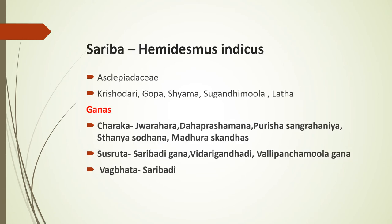The last dravya for today is Shairiba — Hemidesmus indicus, belonging to the family Asclepiadaceae. Shairiba dvaya means there are two varieties: Krishna Shairiba and Shweta Shairiba. Synonyms are Krishodari, Gopa, Shyama, Sugandhi mula — the root has a particular odor. Charaka mentions it in Jvarahara, Dahaprashamana, Purisha sangrahaniya, Sthanyashodhana, and Madhuraskanda ganas. Sushruta mentions it in Shairibadi gana, Vidarigandhadi, and Palli panchamula ganas. Vagbhata also mentions it in Shairibadi gana.